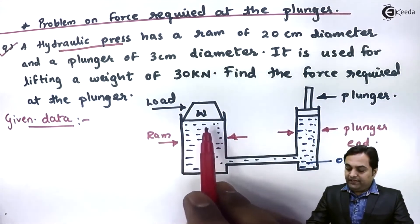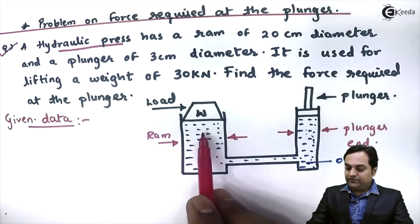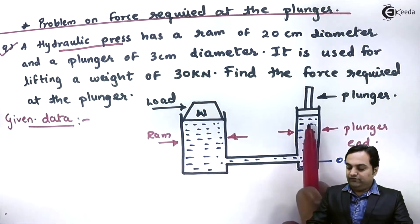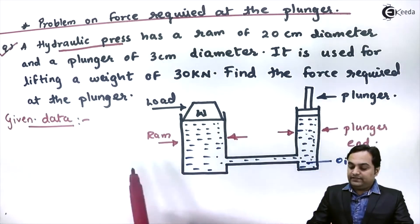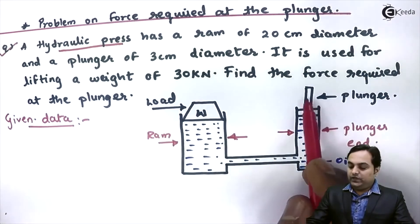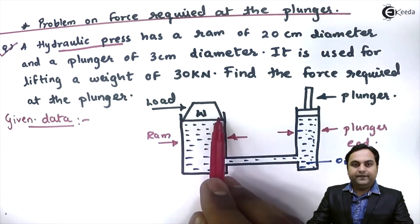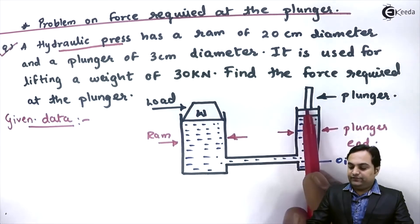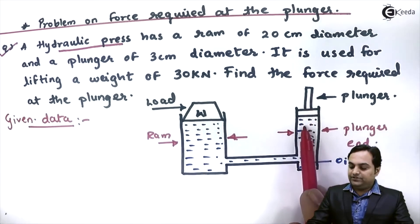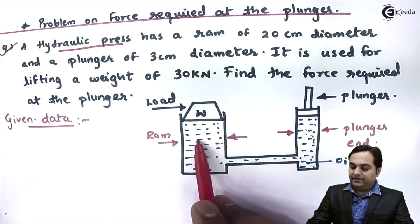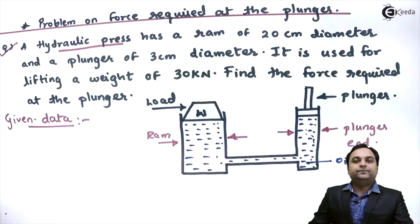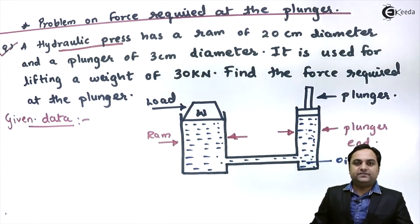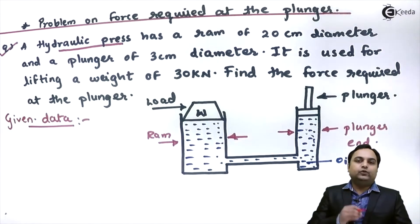Basically, a hydraulic press is a machine which is used to lift heavy loads by applying less effort. The fluid used is oil, as shown in blue, filled throughout the chamber. Whenever we want to lift a heavy load, it is kept on the ram end. We apply a small force at the plunger, which is transmitted through the oil to the ram end, and finally the load is lifted.